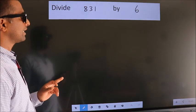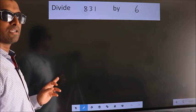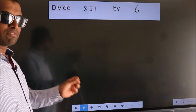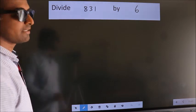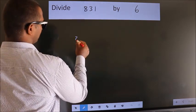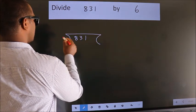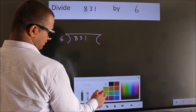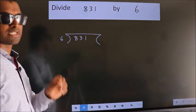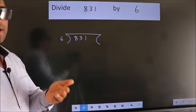Divide 831 by 6. To do this division, we should frame it in this way: 831 here, 6 here. This is your step 1.